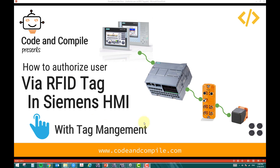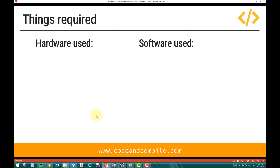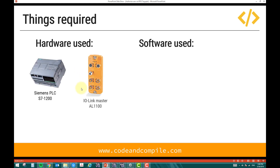We will do some programming in the PLC and some scripts in the HMI, then link them together. This is a very good project to implement in your application. For the hardware, I'm using a Siemens PLC S7-1200 and an IO-Link master AL1100 from IFM.